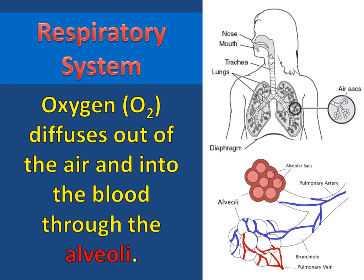Oxygen diffuses out of the air and into the blood through the alveoli. These are tiny air sacs found throughout the lungs that are covered in blood vessels. Oxygen diffuses through the alveoli and into the blood where it attaches to hemoglobin molecules in the red blood cells.